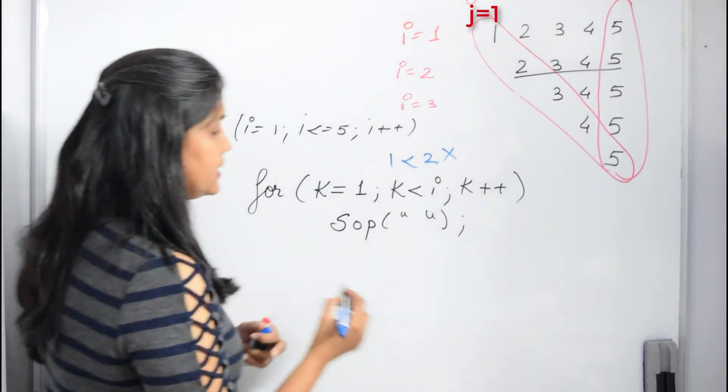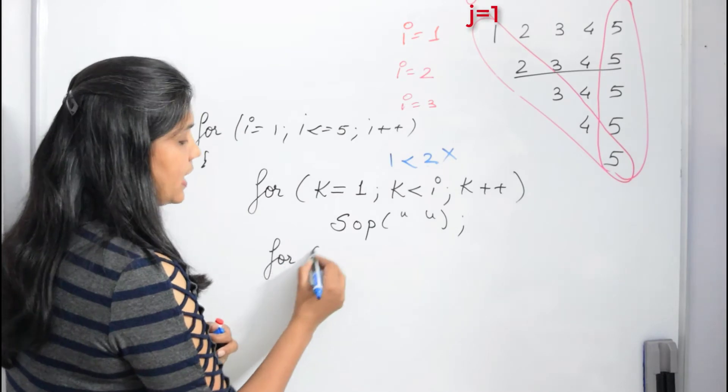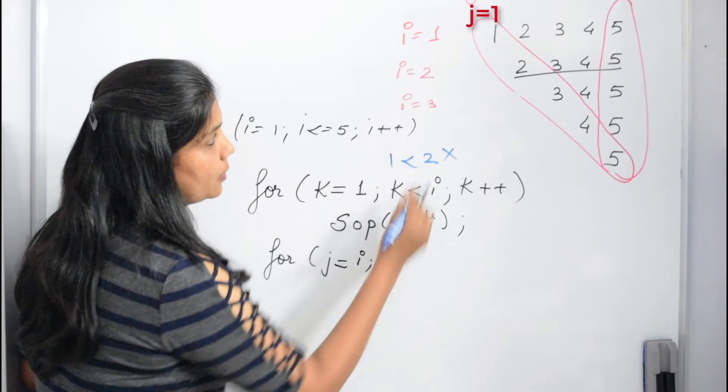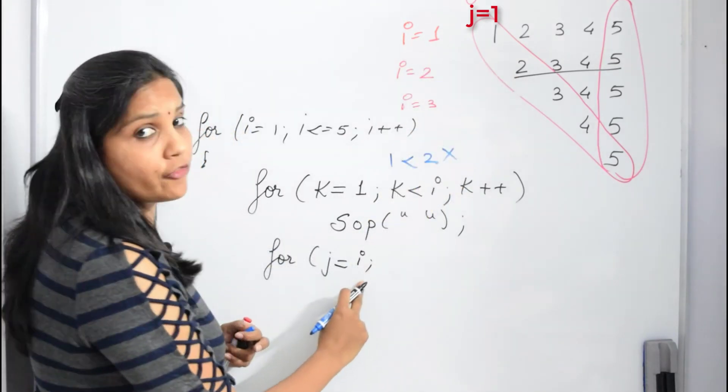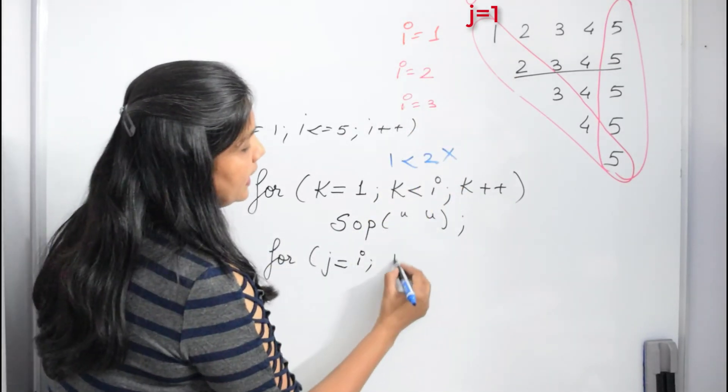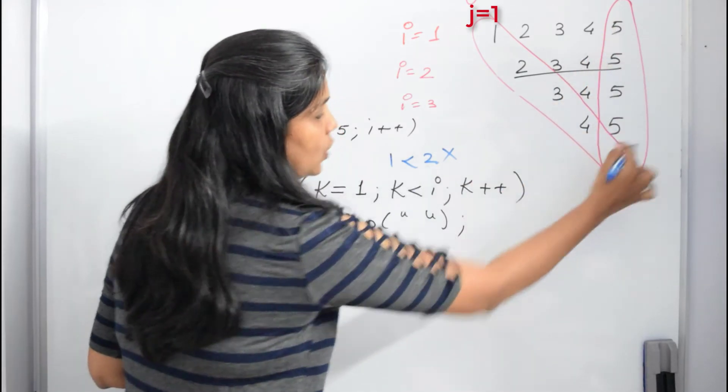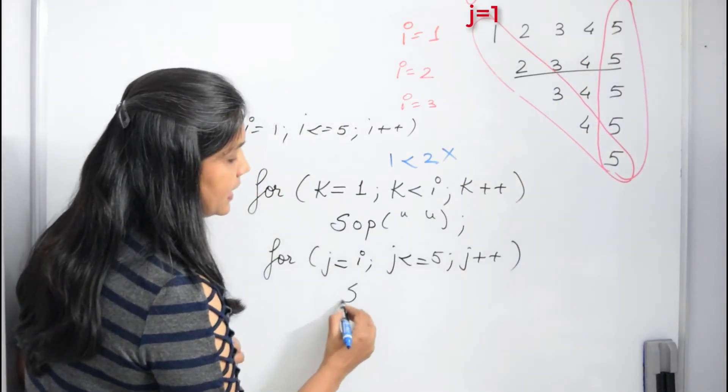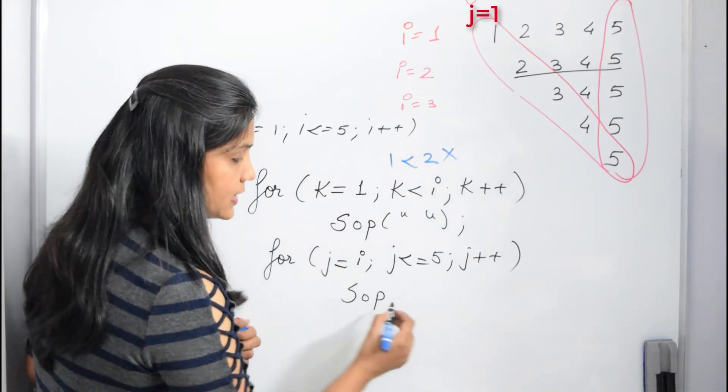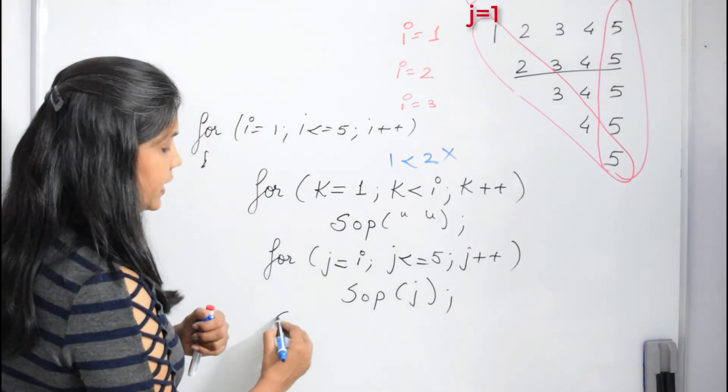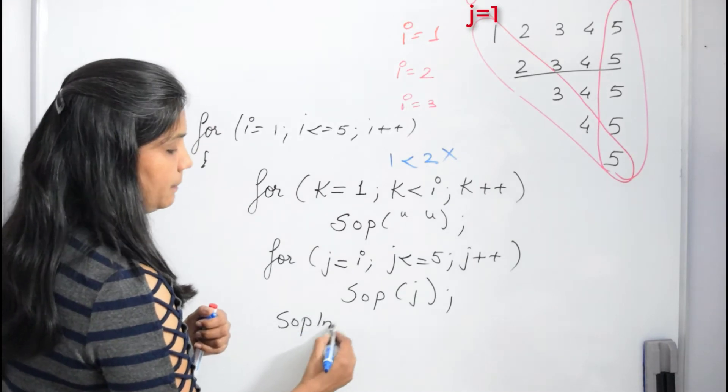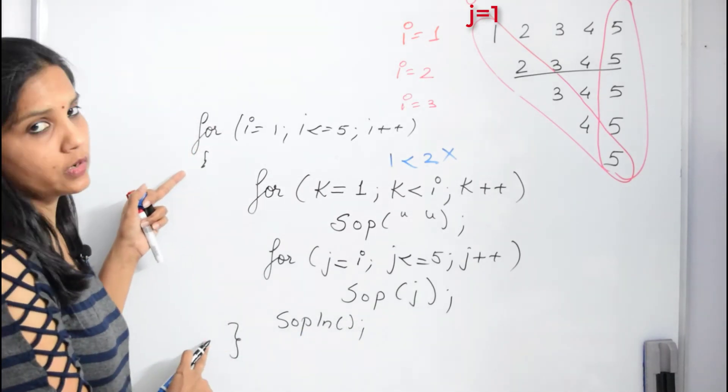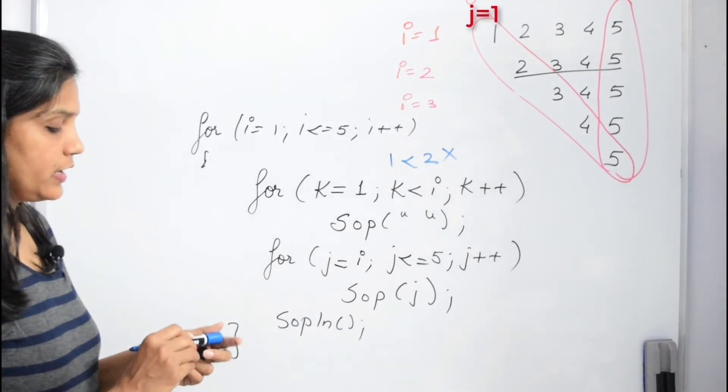You have to print a space and then you have to have another loop that actually prints these values. So then you'll have for j equals to—you can see this is varying—so my j starts from i because it's a varying value, and then it's always constant going till 5, j plus plus. And again I say sop—I don't write sop ln, I just print the value of j. When both loops complete, we put a new line and then we close the outer loop.